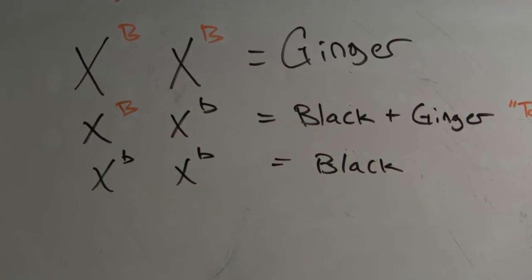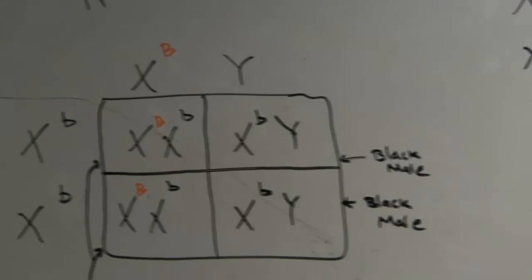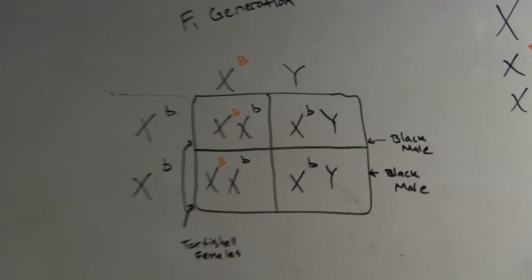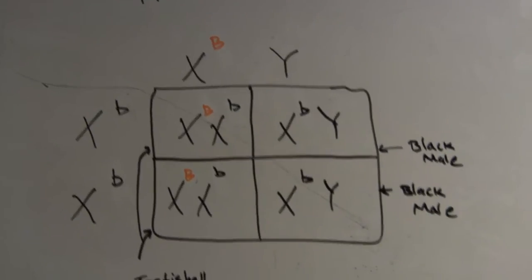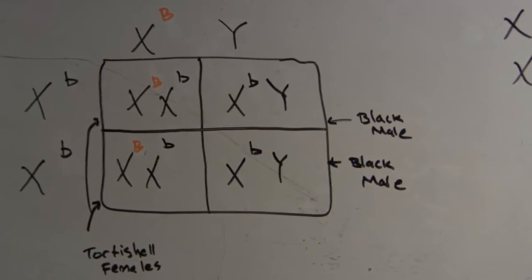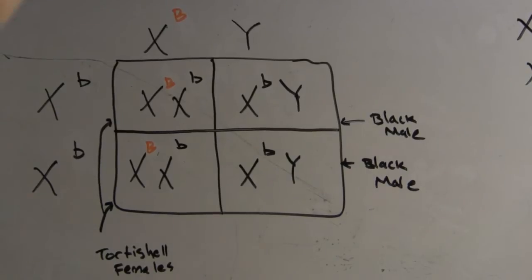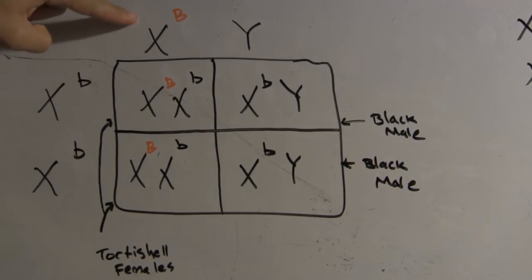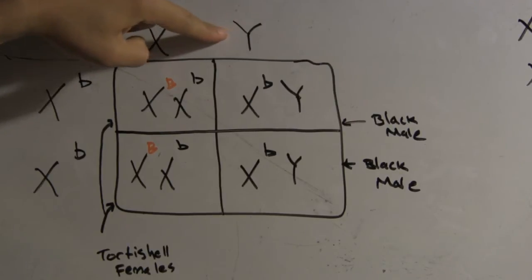So let's move to the F1 generation. So here in the F1 generation, which means filial one generation, what you have is essentially a ginger male, so the X uppercase B and the Y, so the Y indicates the male.